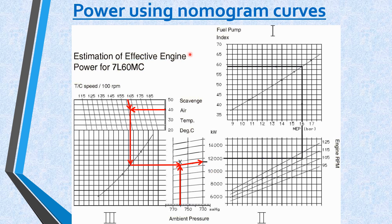Using the right-hand side of the nomogram is a bit simpler, because there you only use fuel index and engine RPM. Read the fuel index value and draw a line parallel to the horizontal lines until it meets the curve. From that intersect point, draw a vertical line down until it meets the relevant engine RPM curve — for example, the 115 RPM curve. From that point, draw another line, and finally you will get the engine power in kilowatts. So there are two methods using this nomogram curve.